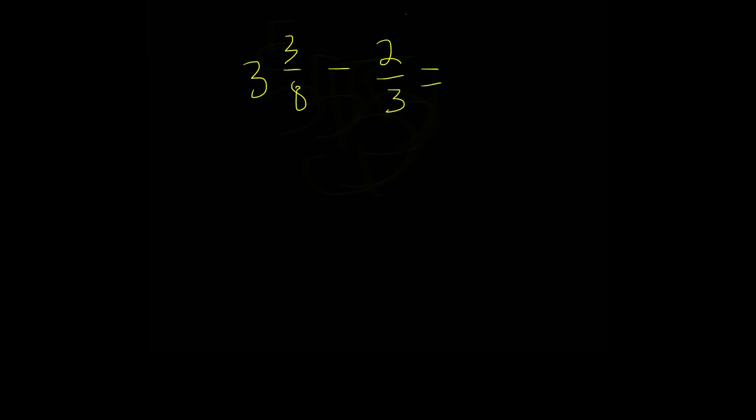Well, what we do first is we multiply the whole number with the denominator. So what's 3 times 8? That's 24. And then we're going to add this to our numerator, which in this case is 3. So this is equal to 27.